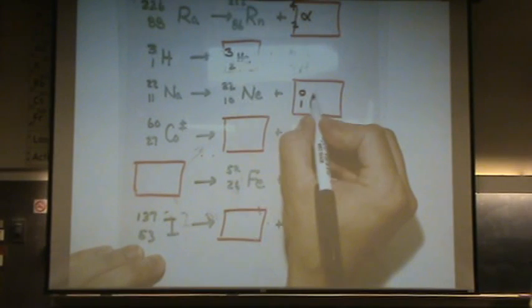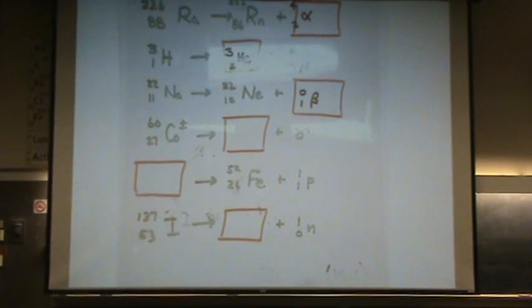That's a positron, or a beta. It's the anti-matter of an electron. It's an electron with a positive charge.